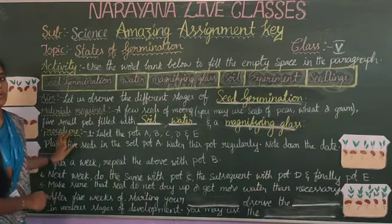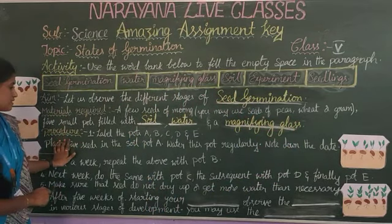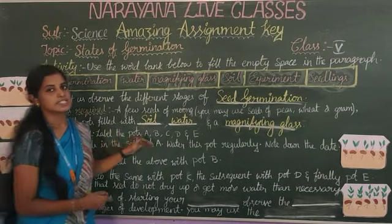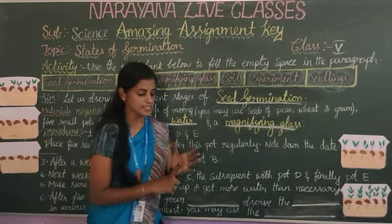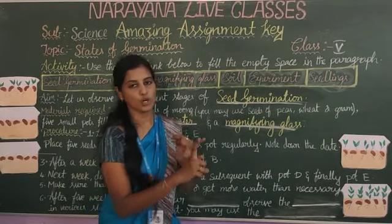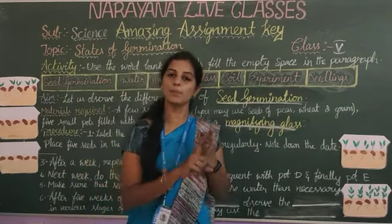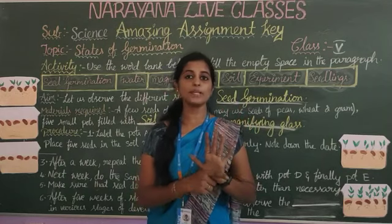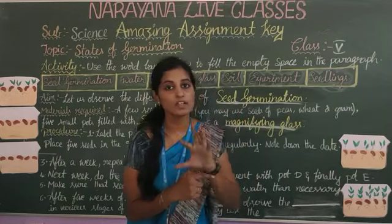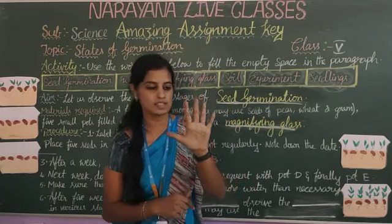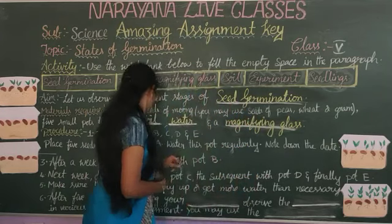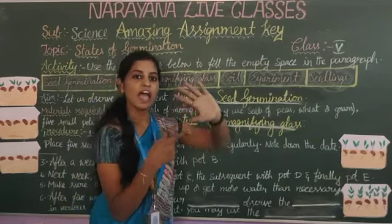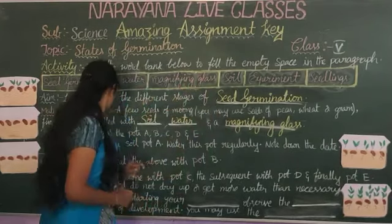Next, what are the procedures? First one: label the pots — pot A, pot B, pot C, pot D and pot E. How many pots? Total five pots. Label them A, B, C, D and E.